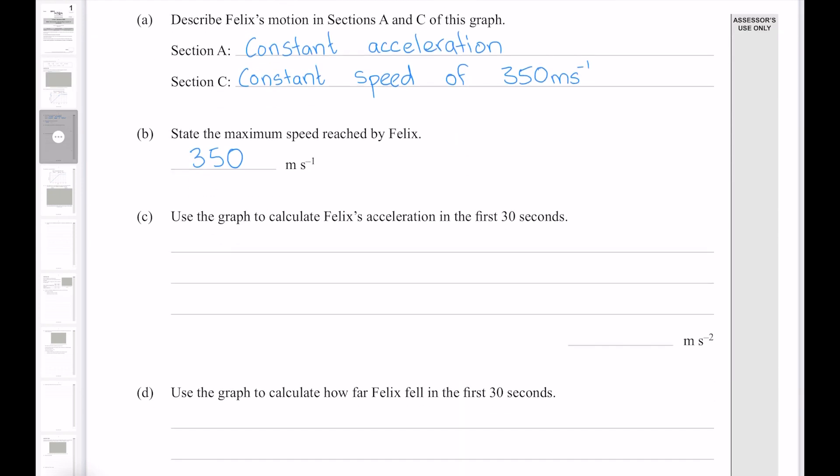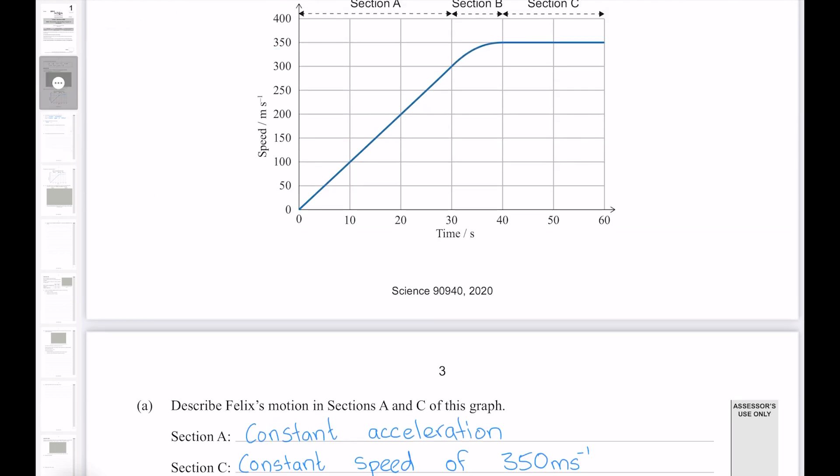Use the graph to calculate Felix's acceleration in the first 30 seconds. Our first 30 seconds are from here to here, where we can see that he has gone from a speed of 0 to 300 meters per second, which he has done in 30 seconds.